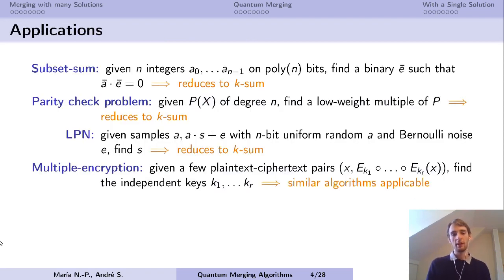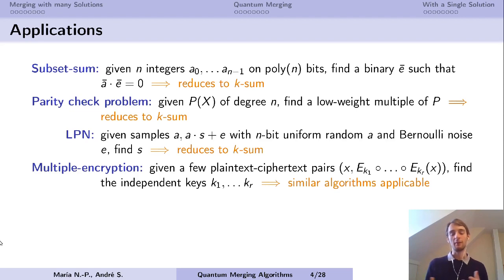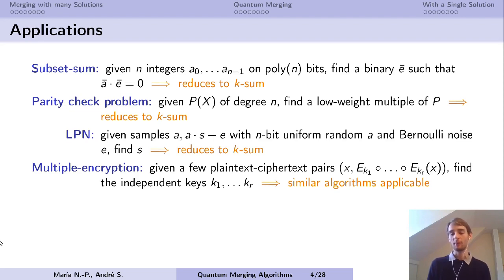There are many applications for this problem. Sometimes there is a direct reduction to the k-sum problem. Even if this doesn't necessarily give the best algorithm, because there are dedicated ones, sometimes we have good time-memory tradeoffs. For direct reduction, we have the subset sum problem, parity check problem, and LPN as well. The multiple encryption problem is not directly reducible to k-sum, but there are similar algorithms that apply to it.